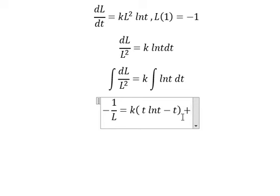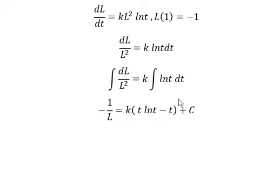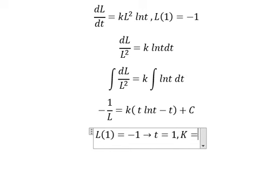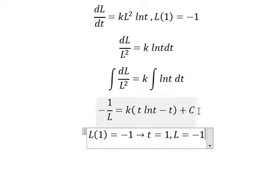And we put C. Next we have the conditions. That means when t equals to number one, L equals to negative number one.